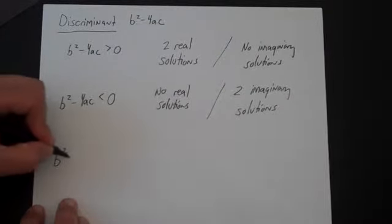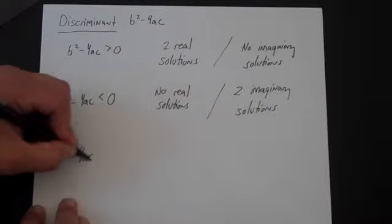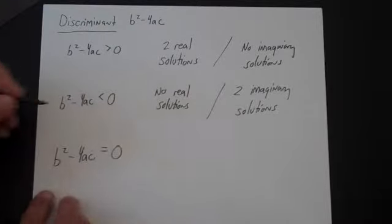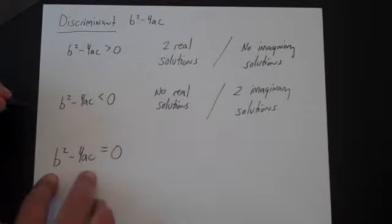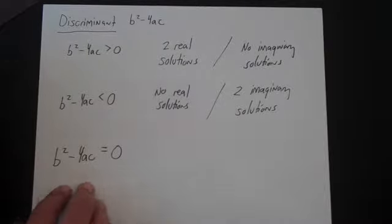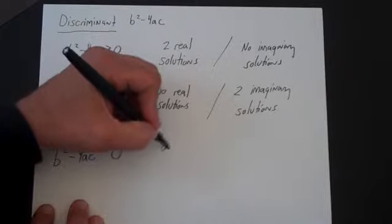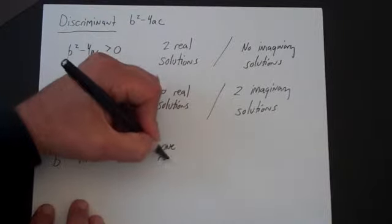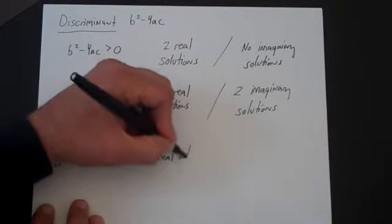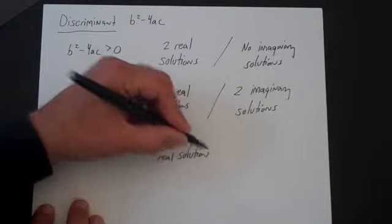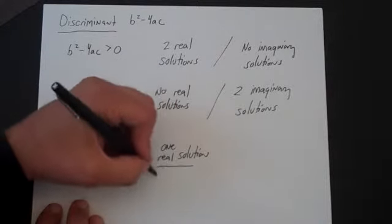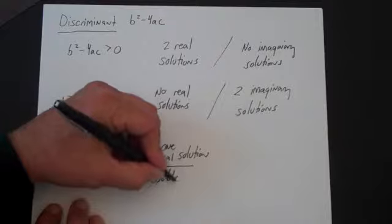If we're going to do this though, we're going to need to change our terminology a little bit. If b squared minus 4ac is equal to zero, then typically in Algebra 1 and sometimes in Algebra 2, we'll say that there is one real solution. But that's a little tricky there. Even though there's one real solution, it's going to be a double solution.